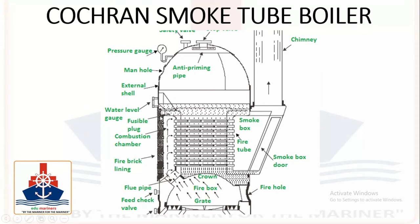The combustion chamber top requires support, so gusset stays are provided which transfer the stress from the flat top of the combustion chamber onto the boiler shell. The flat tube plates are tied together by means of stay tubes which are screwed into the smoke tube section.